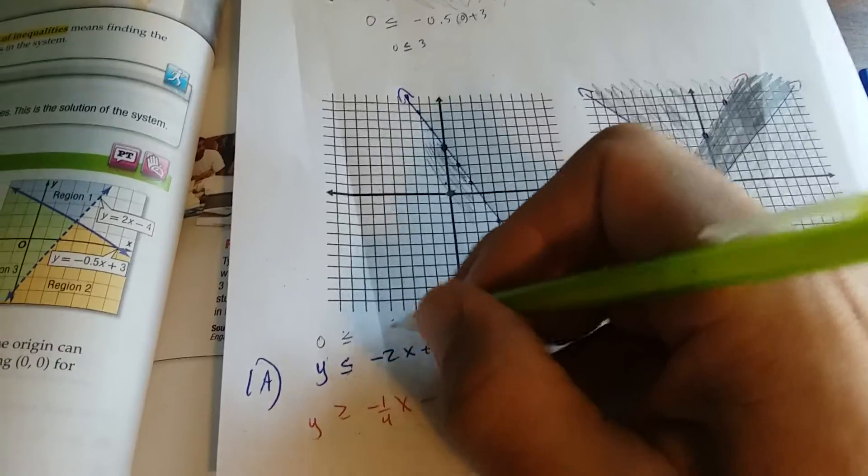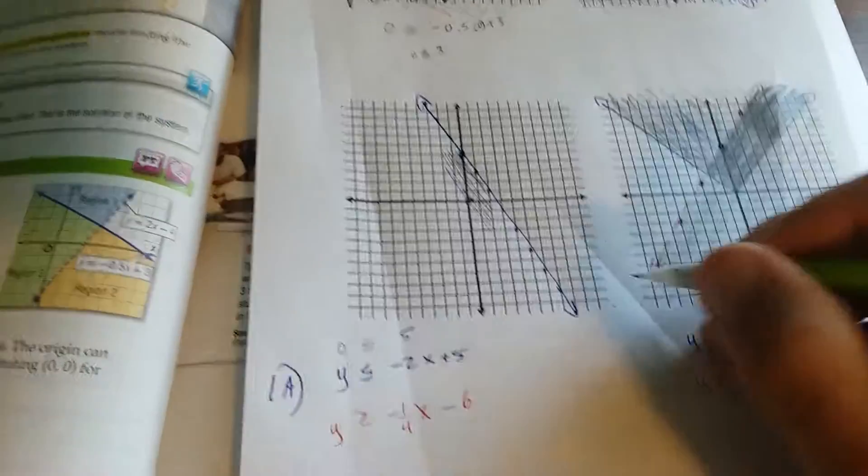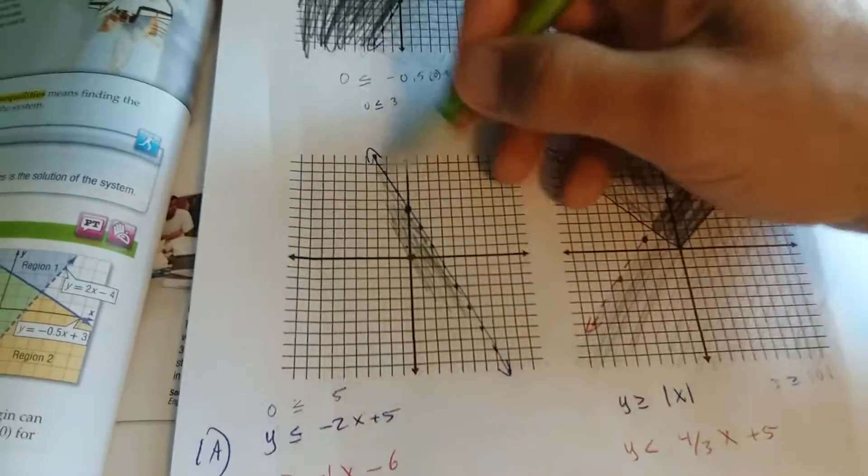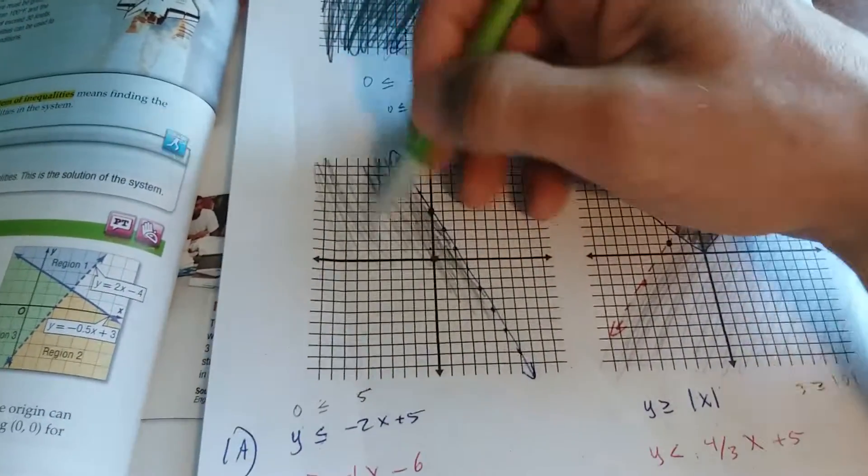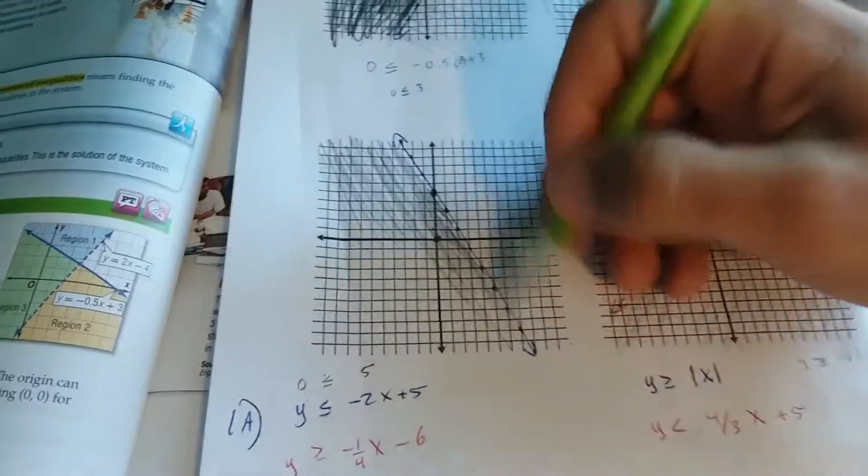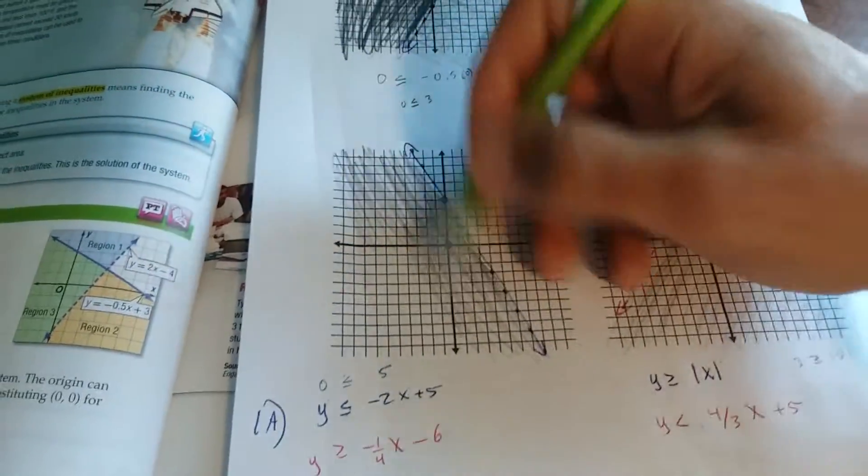So is 0 less than 5? That makes sense. So I know I'm shading in the correct spot here. Shade lightly. You don't shade dark until you find the overlap of the two inequalities. Shade lightly here.